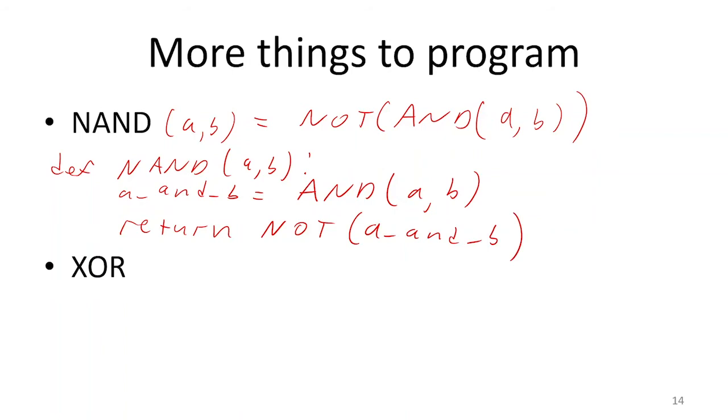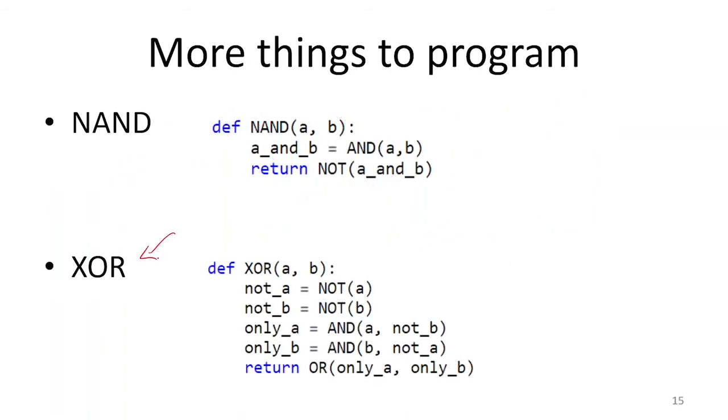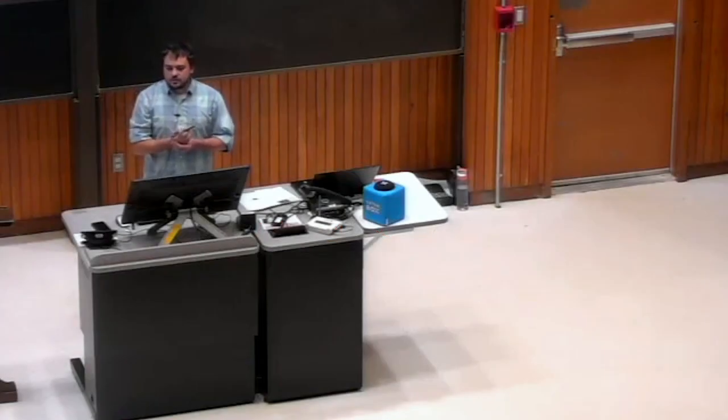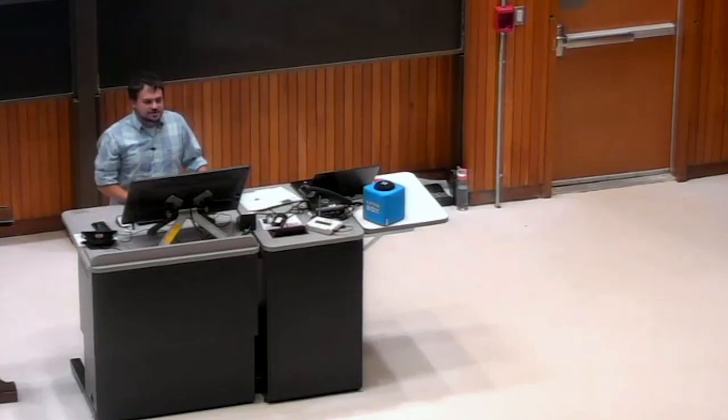We can also do XOR. So XOR is going to be true whenever exactly one is true. So exactly one of A and B is one, is when we make XOR one. I'm going to start by maybe computing not A and then not B, and I want to make sure that it's either the case that A is true but not B, or it's the case that B is true but not A. And either one of those is sufficient for the XOR being true. So we have a programming language. This is our programming language.